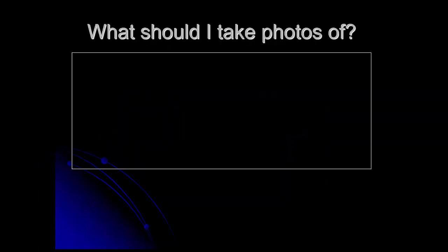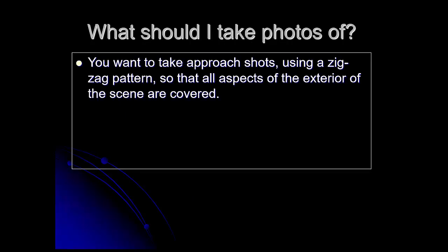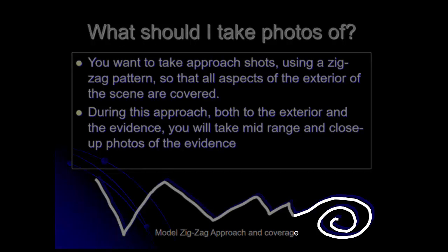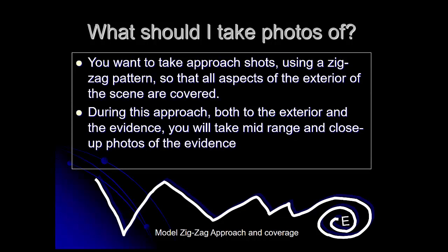When you get to your crime scene, what should you take photos of? When you first arrive, you want to take approach shots. Approach shots show the exterior of your location, mainly coming in towards your entrance. You want to use a zigzag pattern as you get closer to any evidence at the scene so that all aspects of the exterior are covered. During this approach — both to exterior and interior evidence — you want to take some mid-range shots and some close-up photos. Basically, you'll be walking in a zigzag until you reach the evidence, then circling it and continuing to take photos as you get closer.